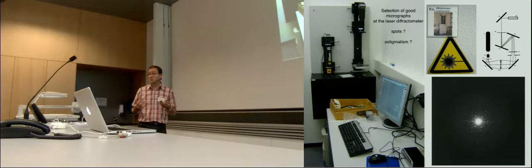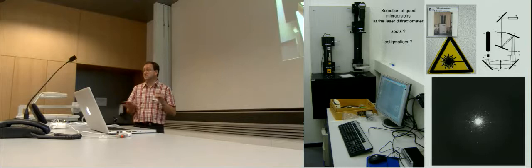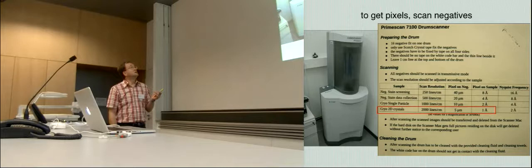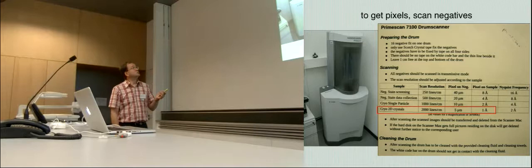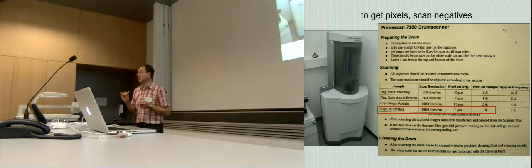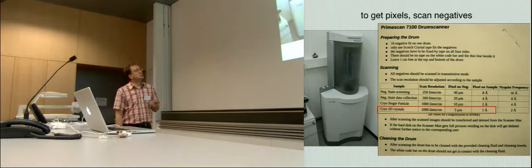And once you have the negatives, you go to a laser diffractogram. You can check if you have spots. If you get astigmatism, you can reject plenty of negatives without even scanning them. Only the very good ones that diffract, that you are happy with, go to the scanner. So we still have this scanner at CIC. It's a very good scanner. It's a prime scan. It is able to scan 16 negatives. And you would check the procedure. And for 2D crystals, you would scan at 2000 lines per centimeter, which is a pixel of 5 micrometers. So I'm starting to tell about pixels. This is now the workshop. And you get one angstrom on the sample.